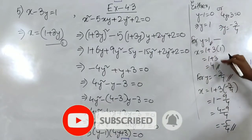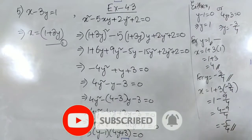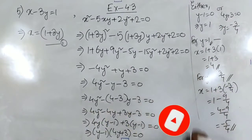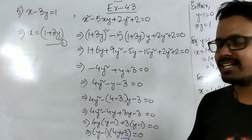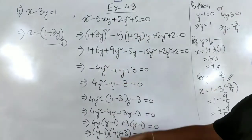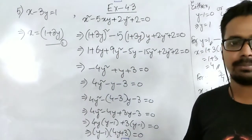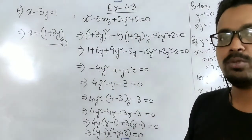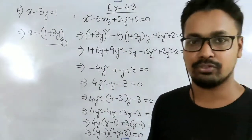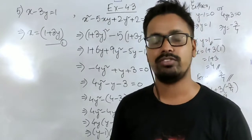So we have 2 values: when y equals 1, x equals 4; and when y equals minus 3/4, x equals minus 5/4. Again a very simple equation — it goes a bit lengthy but the sums are simple. Let's move on to the next type.